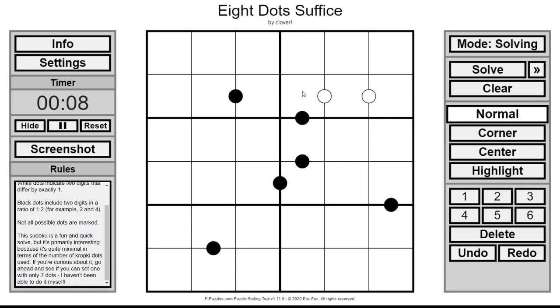White dots indicate that two digits differ by one, so like one, two, three, or four, five, six could work there.